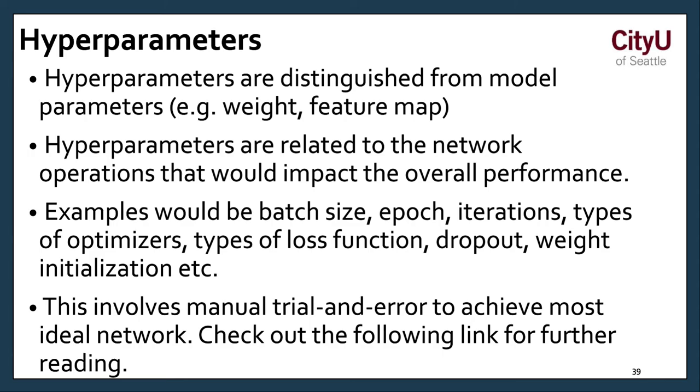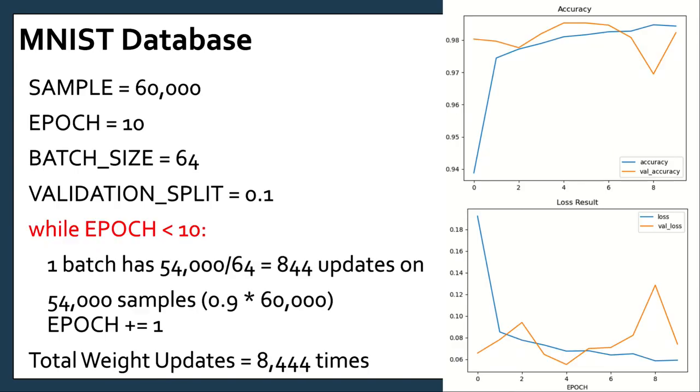We have now what we call the hyper parameters. These are discriminated from the model parameters, like the weight feature map. They are related to network operations that would impact the overall performance. And examples would be the batch size, the epoch, iteration, types of ultimate sensors, types of loss function, dropout, weight, initialization, et cetera. So these are the parameters that we did add in our code. It could involve like a manual trial and error to achieve both ideal network. You should just check out the following links for further reading. Even with the loss function, you do have to research which one could be the good one, the best one. And sometimes if there's no research, you just kind of try different ones.